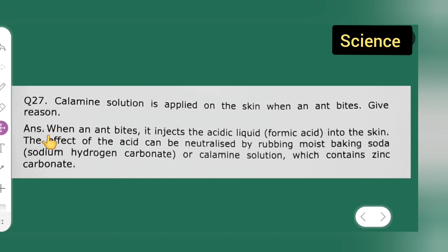Answer is: When an ant bites, it injects the acidic liquid formic acid into the skin. The effect of the acid can be neutralized by rubbing moist baking soda (sodium hydrogen carbonate) or calamine solution, which contains zinc carbonate. You can take down this question and answer. I hope you have understood.